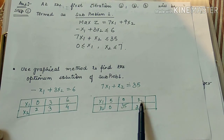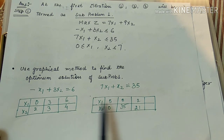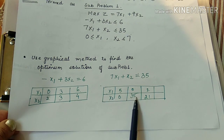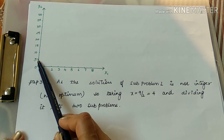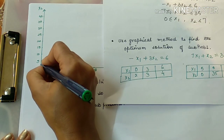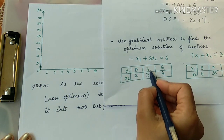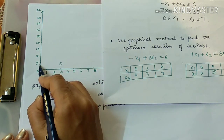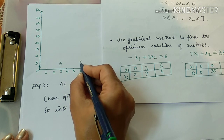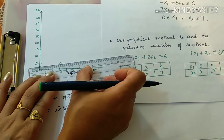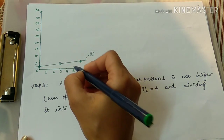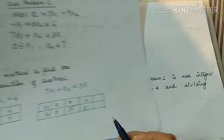For x1 values 0, 3, 6, 5, 2 we take a unit of 1 centimeter. For x2 the values go up to 21 and 35, so we take a scale of 5 units. Plotting these points: x1=0 and x2=2 is here; then (3,3); then (6,4) — joining these gives equation 1. For equation 2: (5,0) and (0,35), joining these two points.